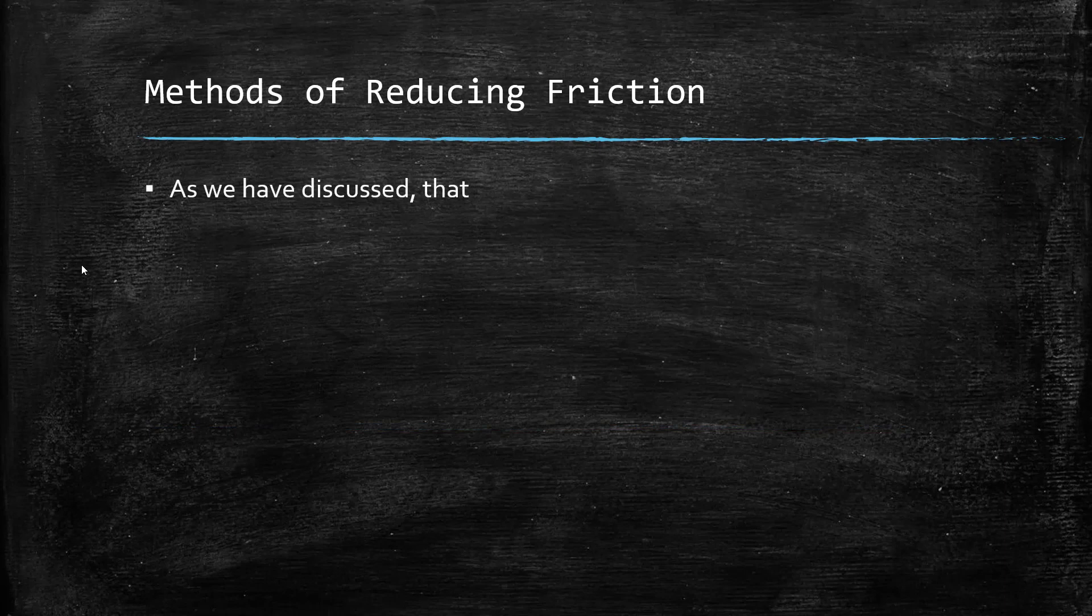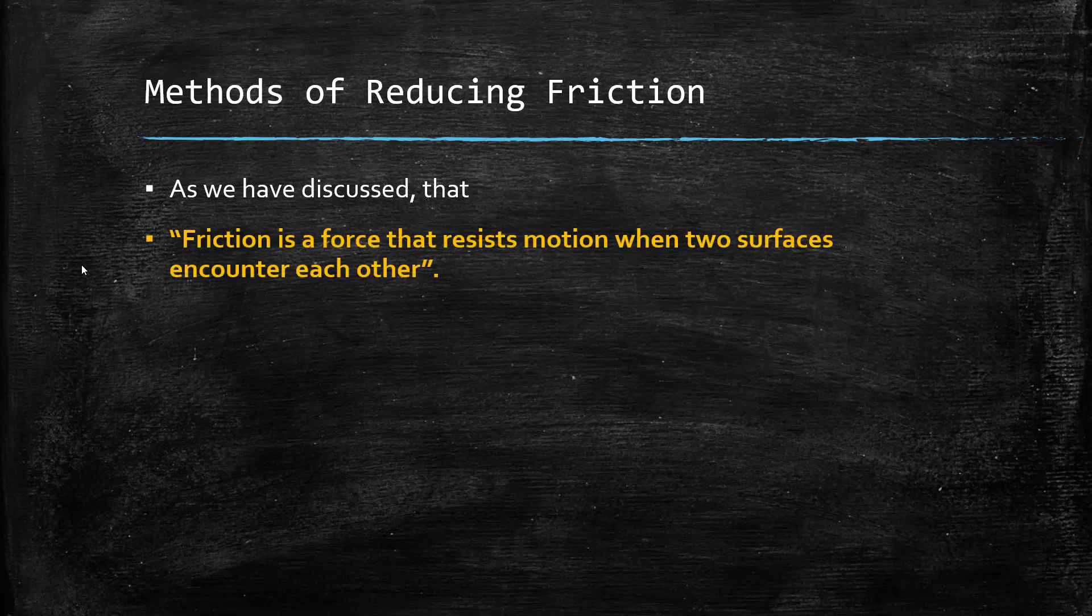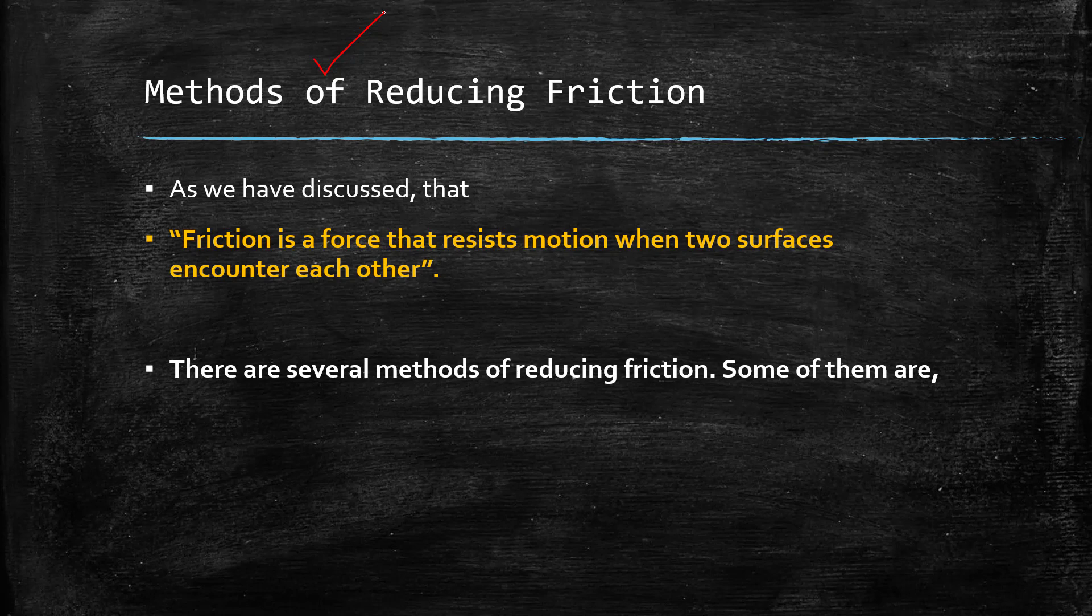In the previous video, we discussed all the advantages and disadvantages of friction. After that discussion, we learned that friction is a force that resists motion when two surfaces encounter each other. When two surfaces are in contact, friction is produced. Now, this friction has some disadvantages, so it is necessary to reduce it. Today we are discussing methods of reducing friction.